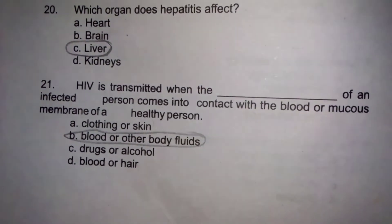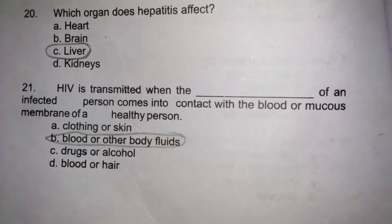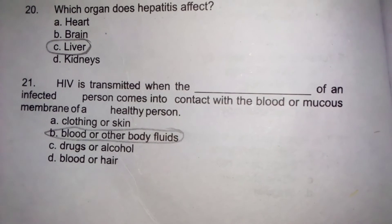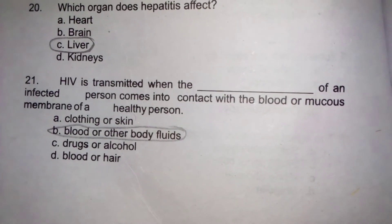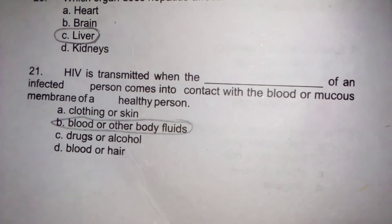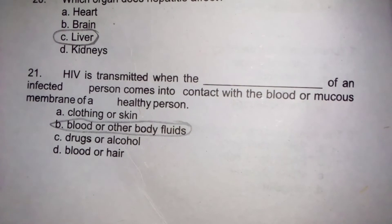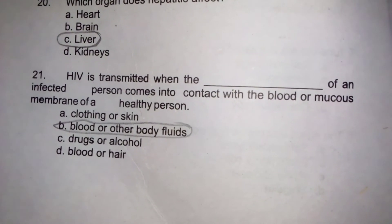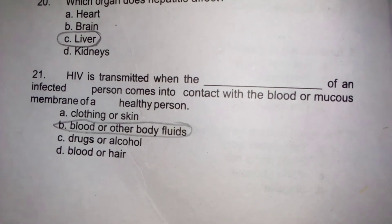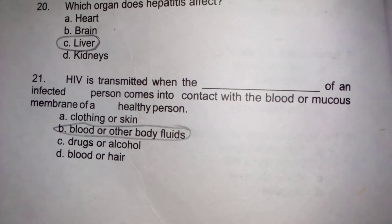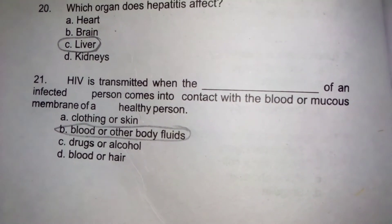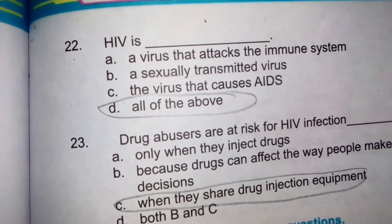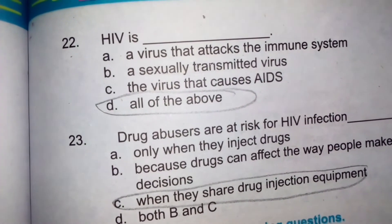HIV is transmitted when blood or other bodily fluids of an infected person come into contact with the blood or mucous membrane of a healthy person. HIV ایک virus ہے جو immune system پر حملہ کرتا ہے — Human Immunodeficiency Virus۔